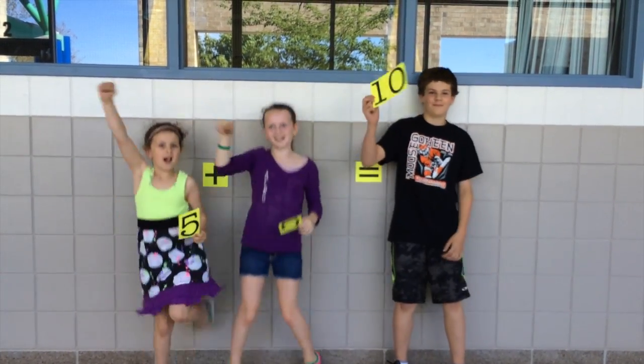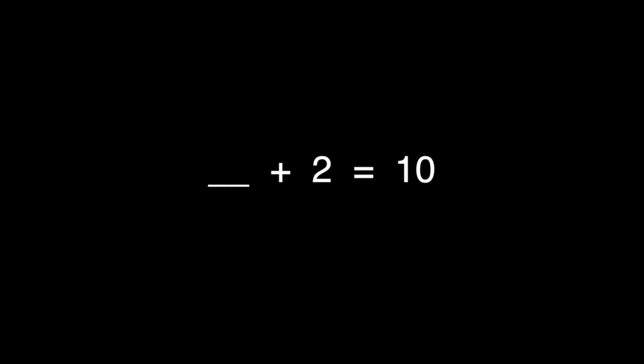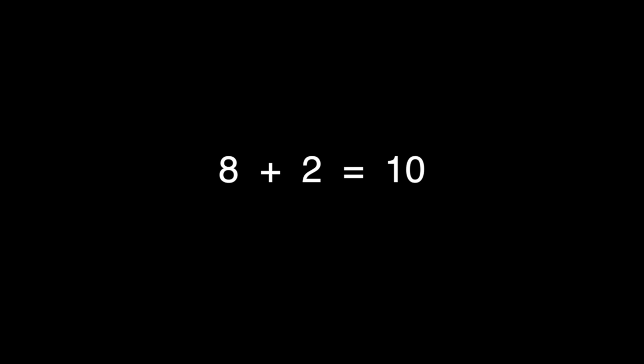In second grade you will learn all about finding missing parts. For example, if you come across an addition sentence, you can use what you know about fact families to help you solve it, since the numbers in a fact family are related and help each other out. Blank plus two equals ten. You can build a subtraction sentence with what you know: the whole minus the known part. Now you can solve and find the missing part.